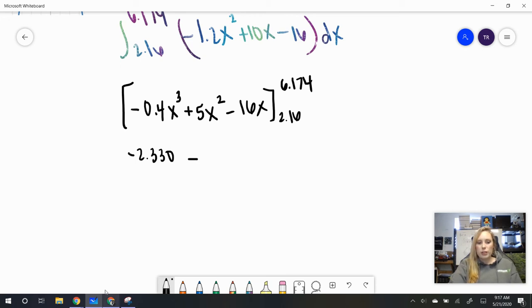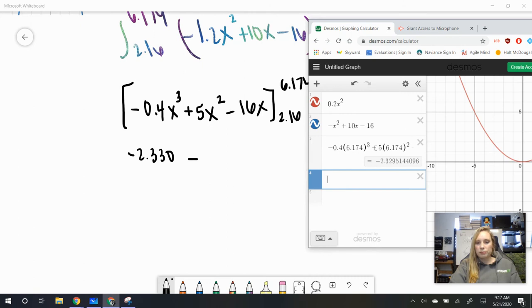So, let's go ahead and plug in the lower bound, and I'll just go ahead and replace these numbers here with 2.16, 2.16, 2.16.